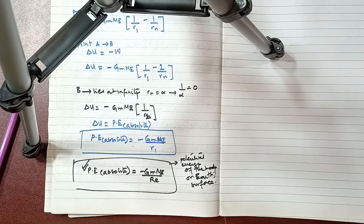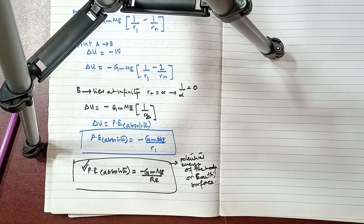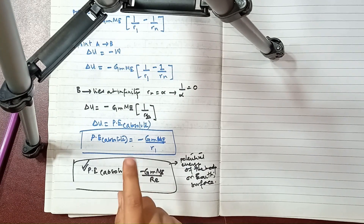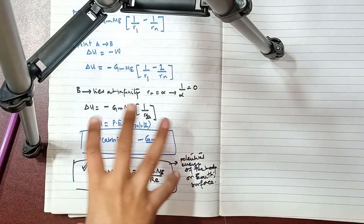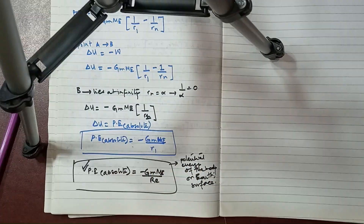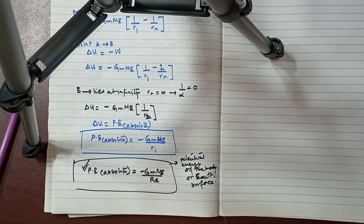That was a super easy derivation. If you want me to also derive the absolute potential energy at a certain height, please let me know in the comments — that topic is related but I'm not doing it here as the video would get too long. If you have any queries, let me know in the comments. I will attach the two pages of this derivation at the end so you have a sorted reference. Take care, Allah Hafiz.